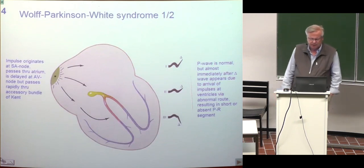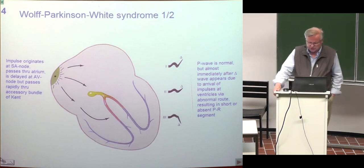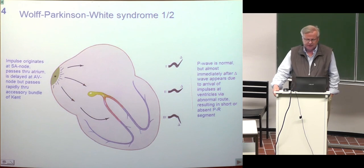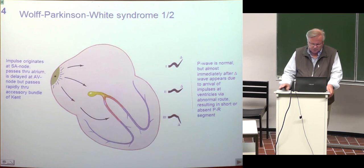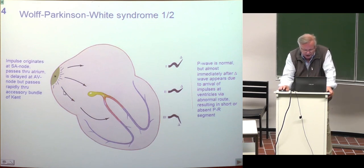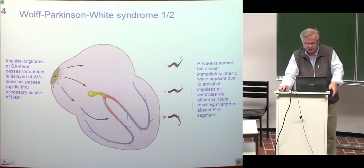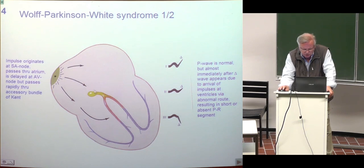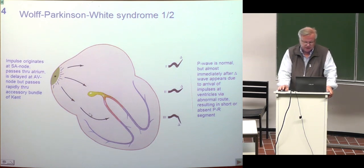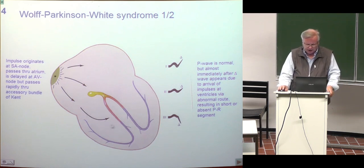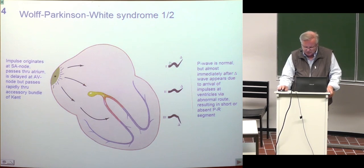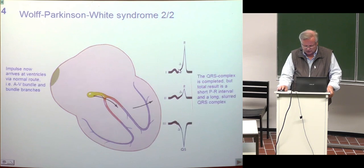The WPW syndrome — full name Wolff-Parkinson-White syndrome — is a situation where activation from the atria can go directly through the wall between atria and ventricles, which is abnormal. Normally activation proceeds only through the AV node. The abnormal direct path causes initially abnormally early ventricular activation — here is the P-wave and then there is an abnormal early ventricular activation called the delta wave, making the QRS complex start abnormally too early.